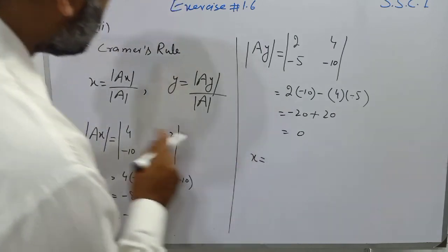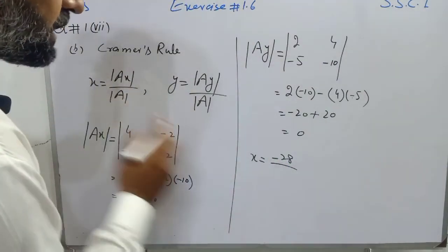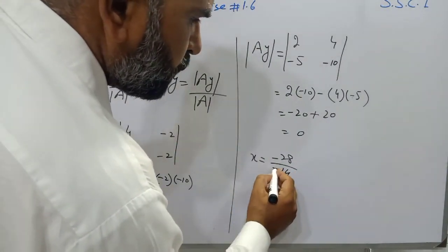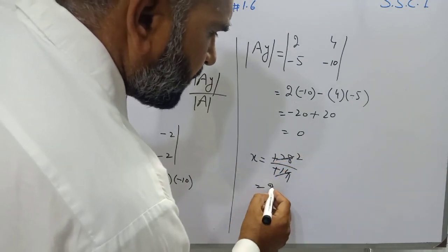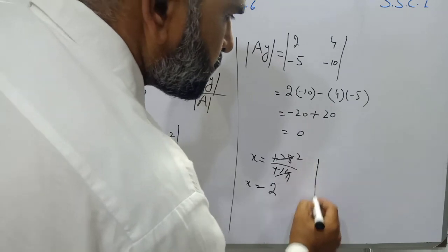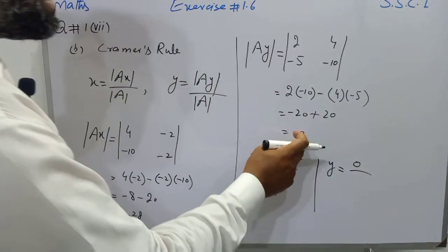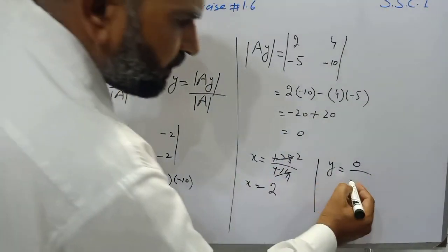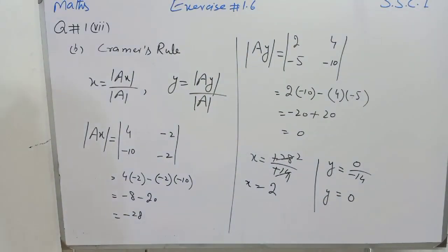So x is equal to the Ax determinant over the A determinant: minus 28 over minus 14, which gives x equal to 2. And y is equal to the Ay determinant over the A determinant: 0 over minus 14, which gives y equal to 0. That's enough for today. May Allah Almighty bless you all, and have a good day.